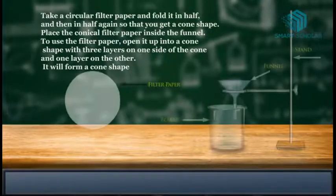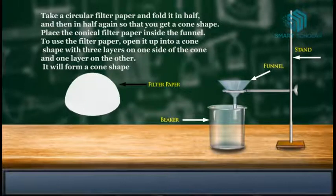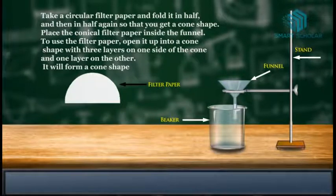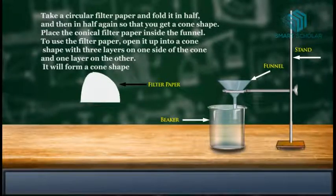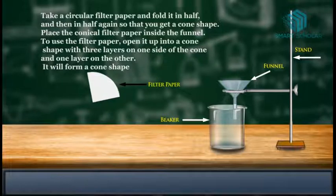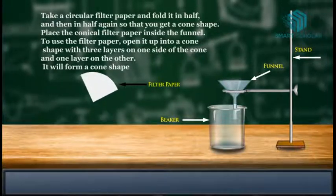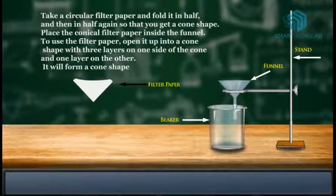Take a circular filter paper and fold it in half, and then in half again so that you get a cone shape. Place the conical filter inside the funnel. To use the filter paper, open it up into a cone shape, with three layers on one side of the cone and one layer on the other. It will form a cone shape.